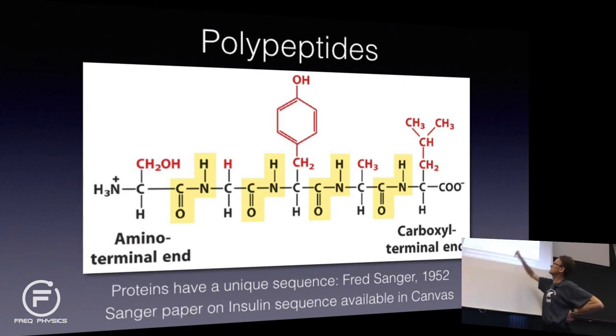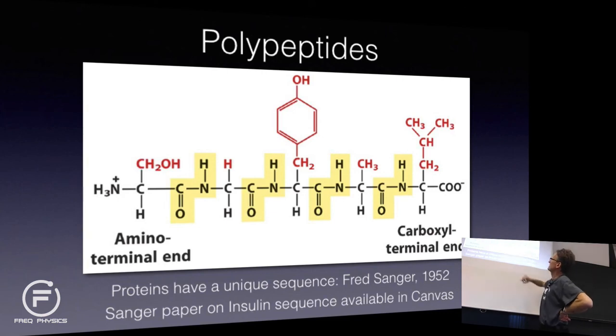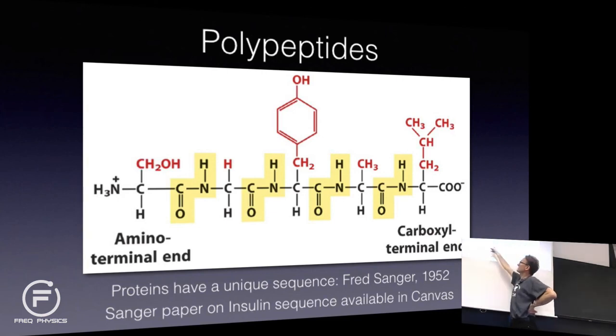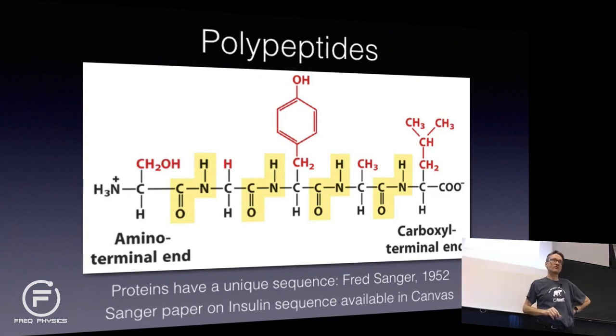What tells different proteins apart is the R groups — the side chains — that's literally what makes one amino acid different from another. So you have a tyrosine there, an alanine there, and a glycine there. Different side chains — the ones in red — will cause diversity.